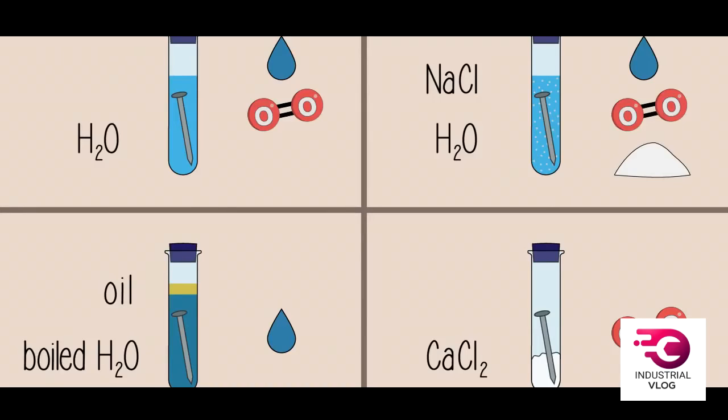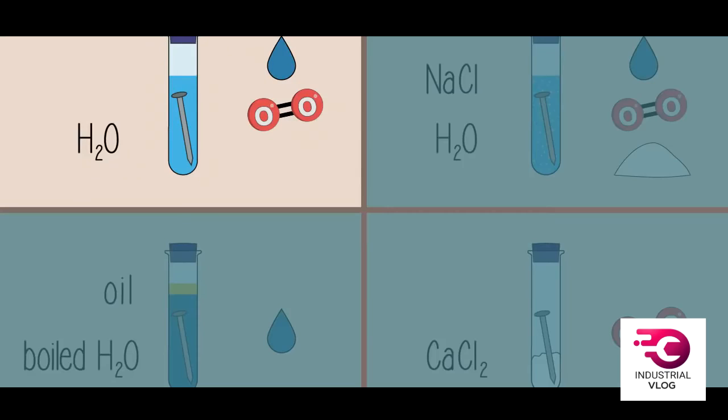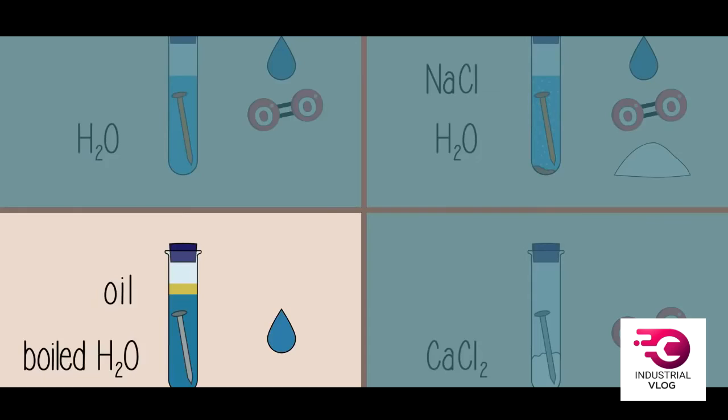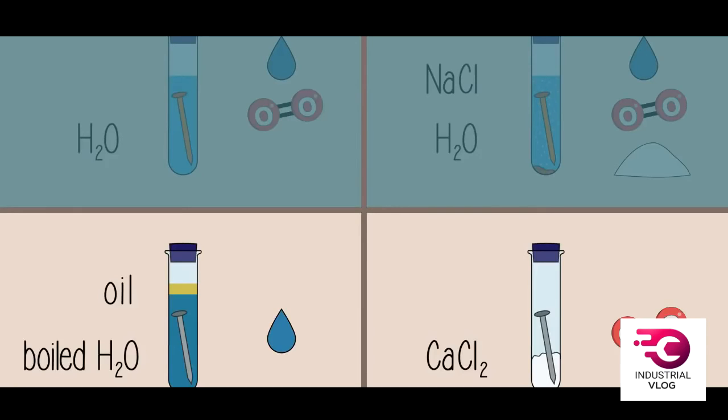Stopper all four test tubes with a rubber bung and let stand for a couple of days. You will find that the nails in the first and second test tubes have rusted. In particular, the nail in the second test tube has rusted more than the nail in the first test tube, and the rust has likely flaked off. You may see a reddish-brown precipitate at the bottom of these tubes. The nails in the third and fourth test tubes have not rusted.